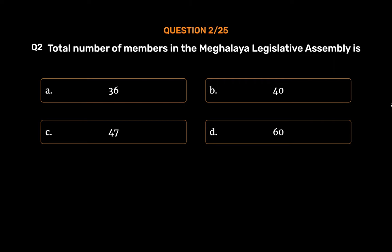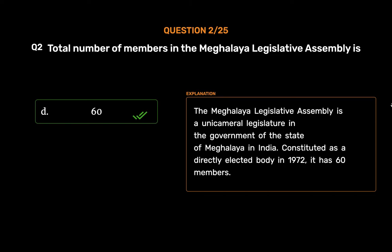The correct answer is Option D: 60. The Meghalaya Legislative Assembly is a unicameral legislature in the government of the state of Meghalaya in India. Constituted as a directly elected body in 1972, it has 60 members.